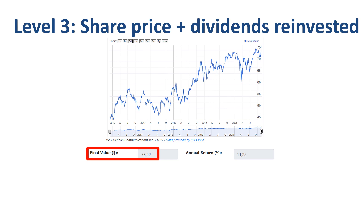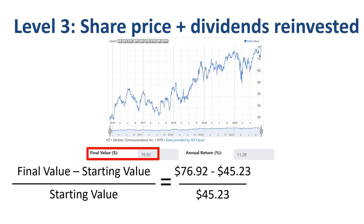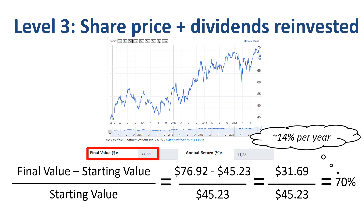Our updated formula for the stock return calculation is: final value minus starting value divided by starting value — $76.92 minus $45.23 divided by $45.23. This is $31.69 divided by $45.23, or 70% gain in 5 years. On a straight-line basis, this equates to 14% return per year.